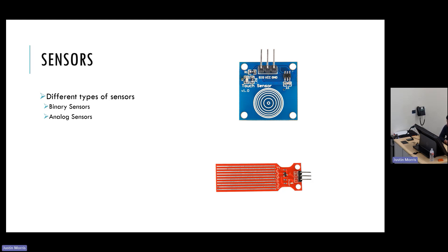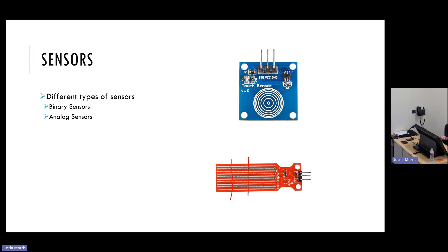And then we also have analog sensors. One of these analog sensors that you have in your kits is this water level detector. The way this sensor works is based on where the water level is — if it's submerged this much, the resistance of the sensor changes and that is fed back into the Arduino. So based on the water level, you have a different resistance, and you have to decipher what the water level is based on the resistance.